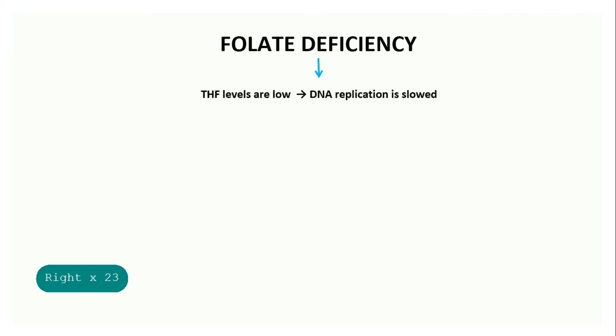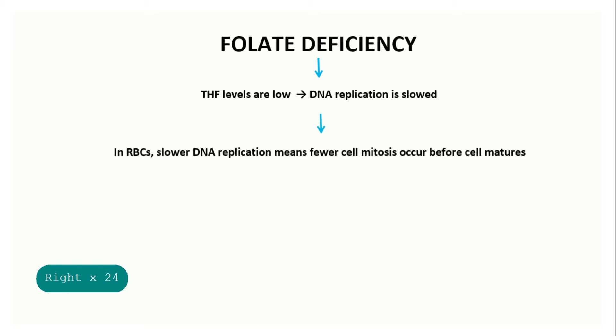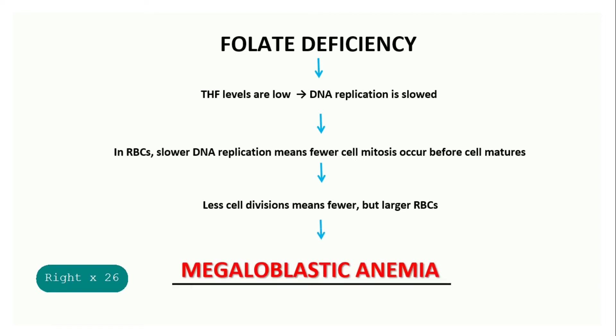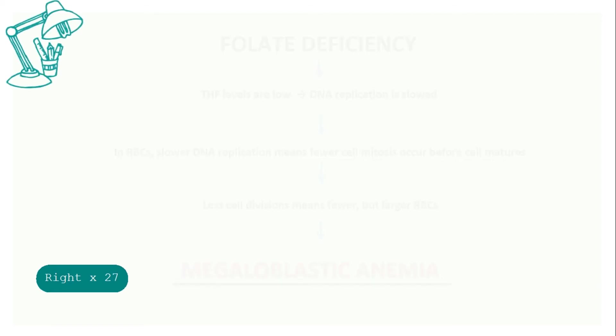So when folate deficiency occurs, the tetrahydrofolate levels are low, which leads to slow DNA replication. In RBCs, slower DNA replication means fewer cell mitoses occur before the cell matures. Less cell divisions means fewer but larger RBCs. This may result in megaloblastic anemia.